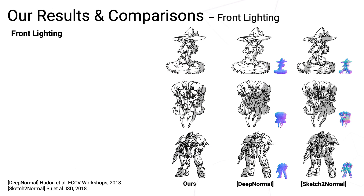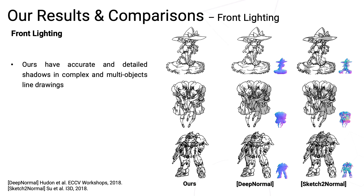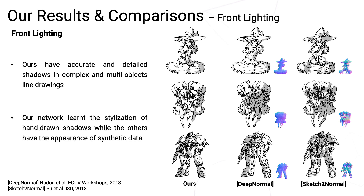We compare our work with Deep Normal and Sketch2Normal. Their inputs are line drawings, the same as ours; however, their outputs are normal maps. To compare with our shadows, we render out the normal maps with thresholding at 0.5. Our results have accurate shadows in complex and multi-object line drawings, and our network learned the stylization of hand-drawn shadows, while the others have the appearance of synthetic data.